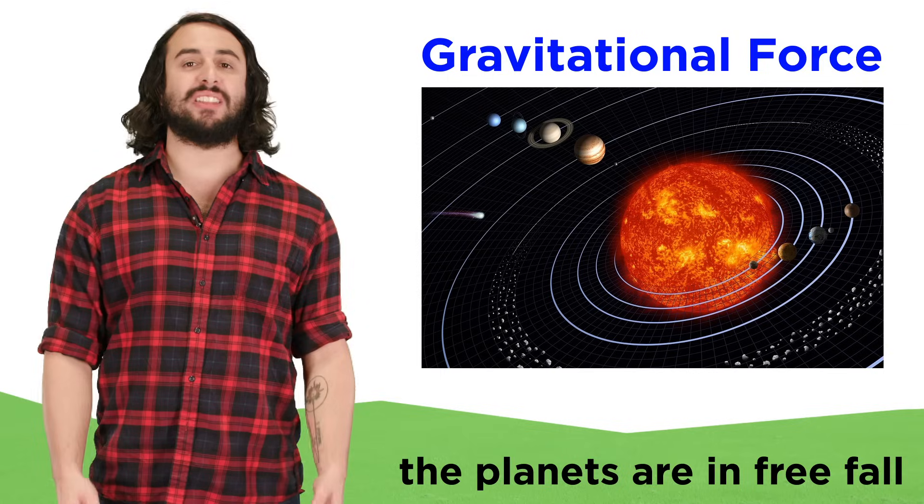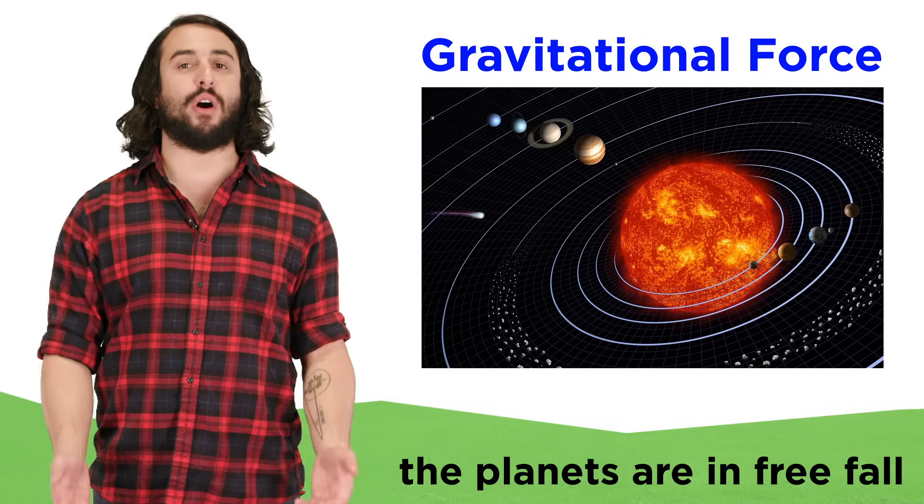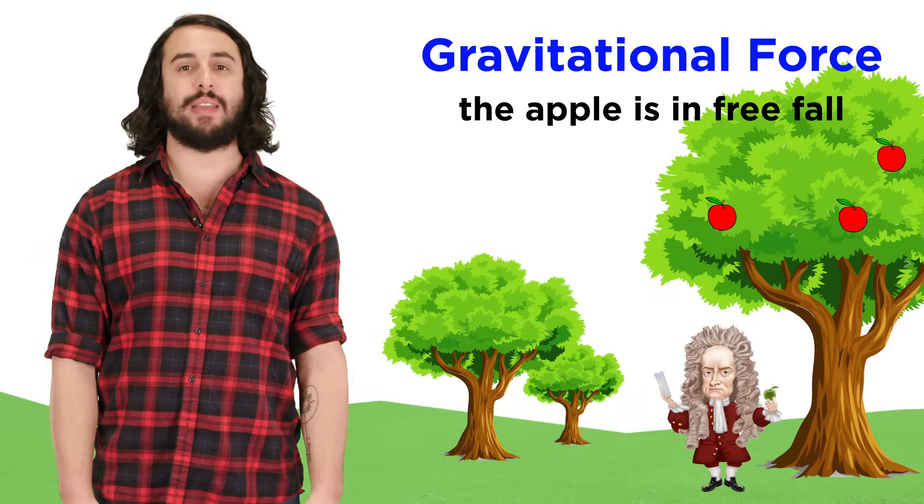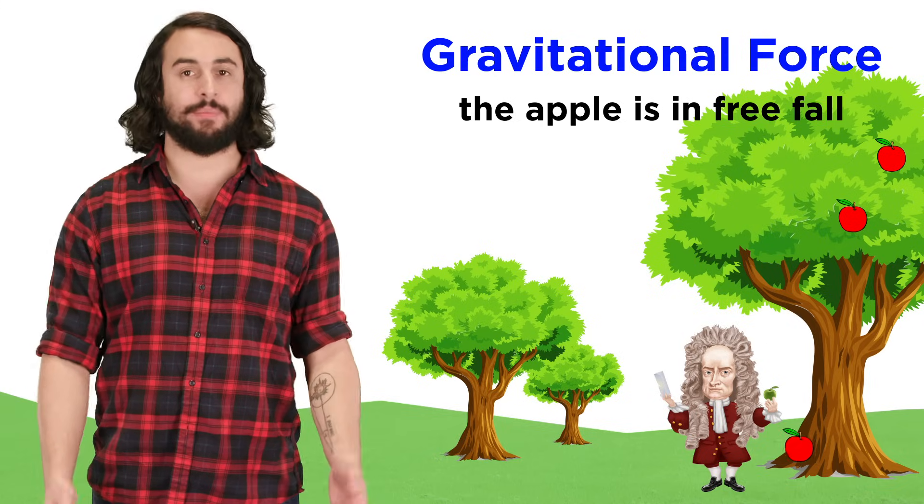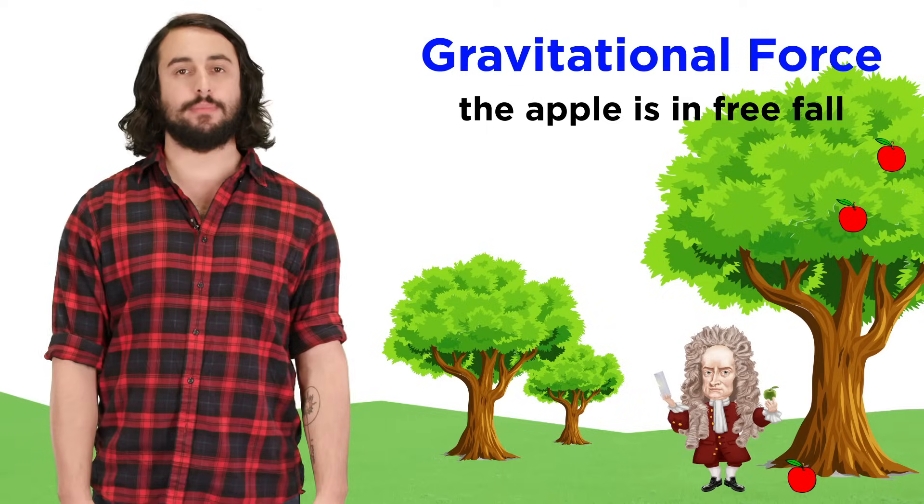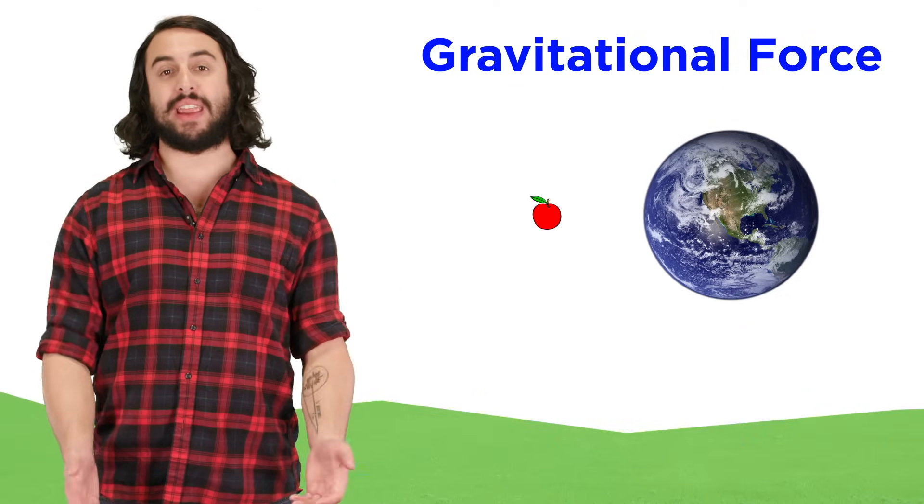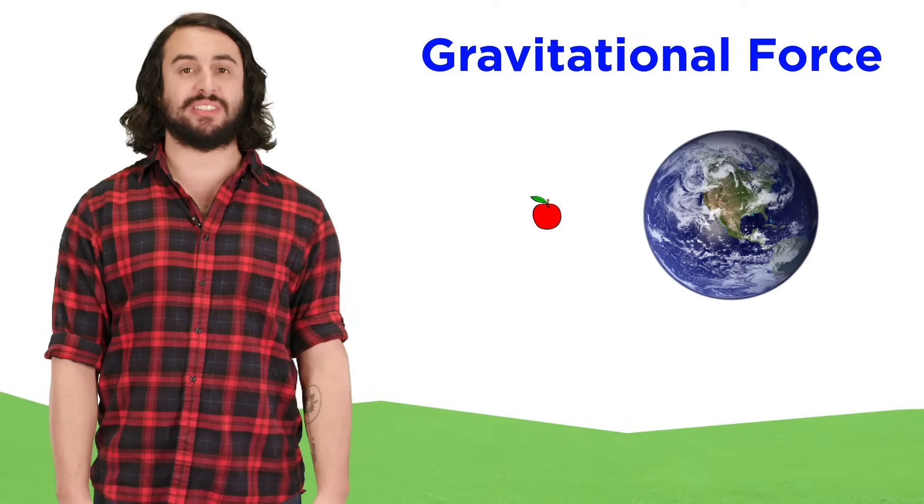In this way he proposed that the planets are in a kind of freefall towards the Sun, just the same way that the apple that mythically hit him on the head to produce this insight was in freefall towards the Earth. The objects differ greatly in size, but the concept is the same.